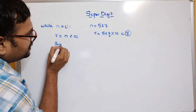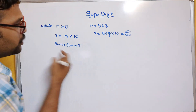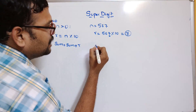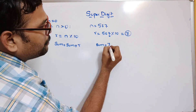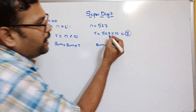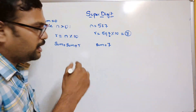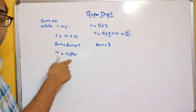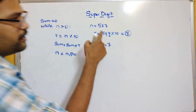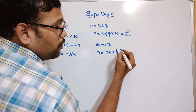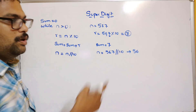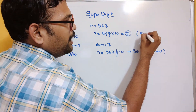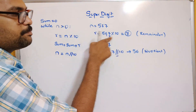We accumulate the sum: sum equals sum plus r. Initially sum is 0, so after the first step sum becomes 7. Then to get the next digit we reduce the number using floor division: n equals n floor-divided by 10. For n equals 567, floor division by 10 gives 56. Floor division gives the quotient; mod gives the remainder.